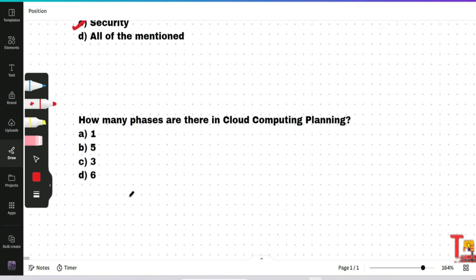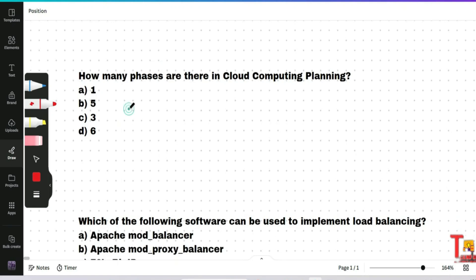Okay, the next question is how many phases are there in cloud computing planning: one, five, three, or six? Actually, option C will be the correct answer. Strategy phase, planning phase, and deployment phase are the three phases of cloud computing.